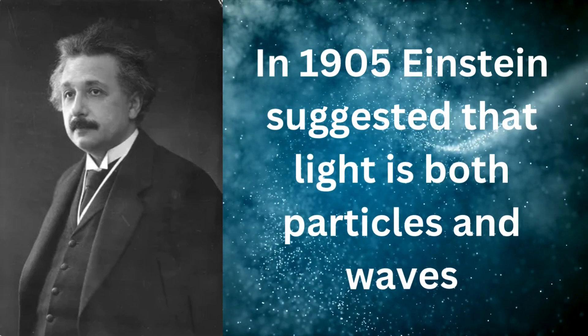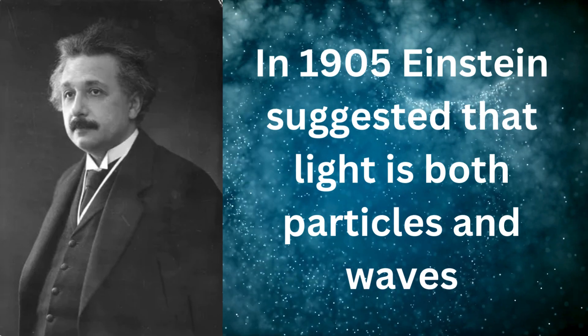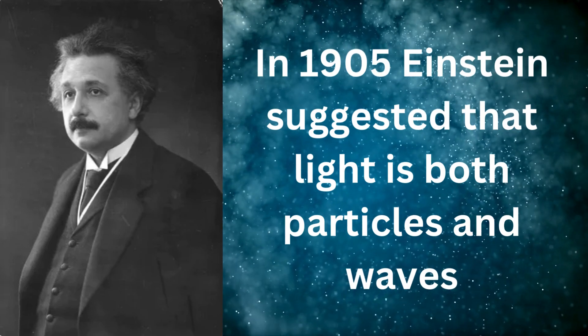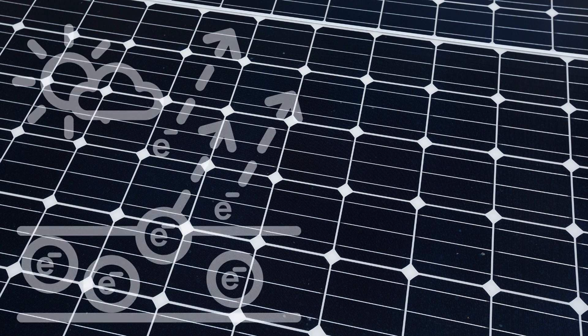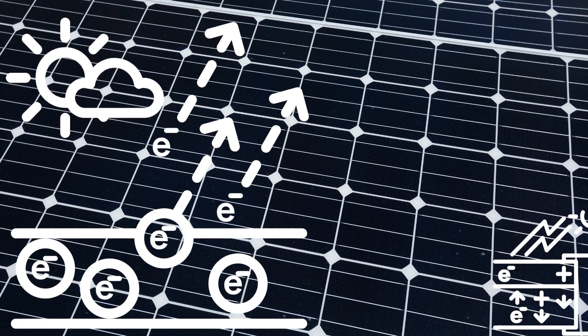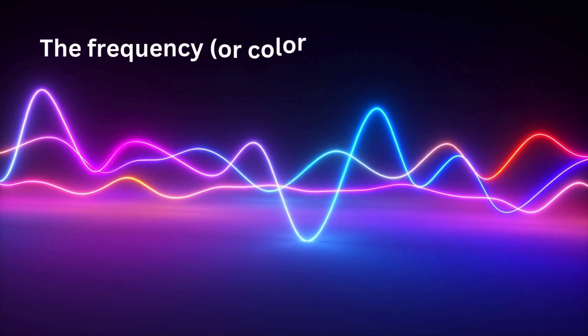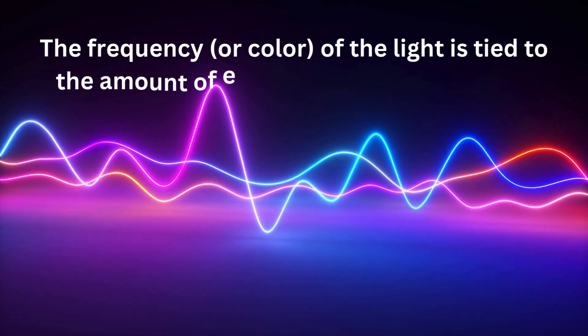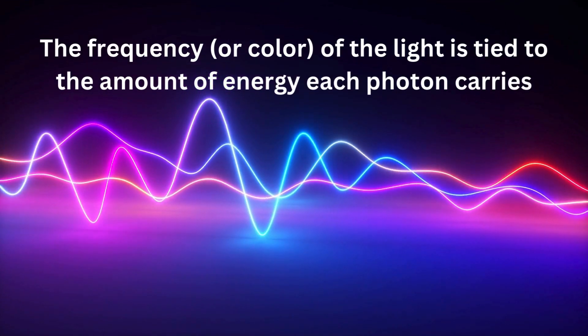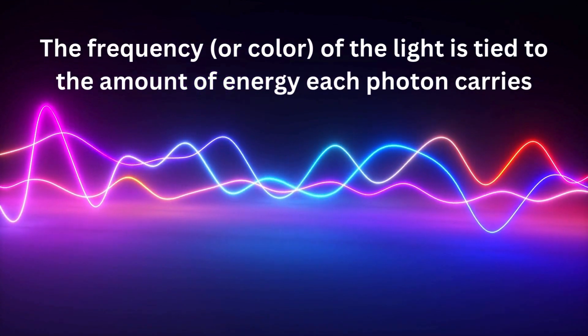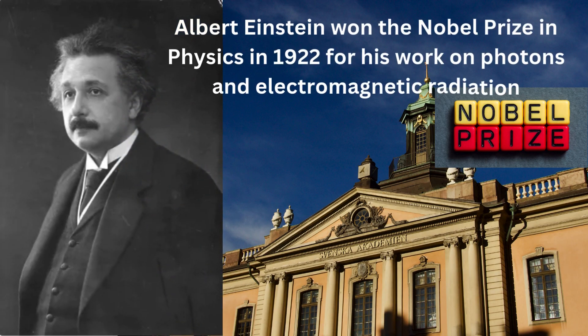His explanation is based on the photoelectric effect. This is the way a sheet of metal emits electrons when hit with light. Einstein demonstrated that the intensity of the light shined on the metal is tied to the number of photons in the light. The frequency, or color of the light, is tied to the amount of energy each photon carries. Albert Einstein won the Nobel Prize in Physics in 1922 for his work on photons and electromagnetic radiation.